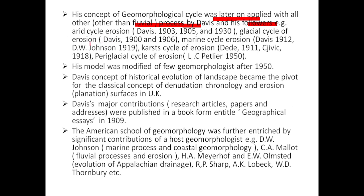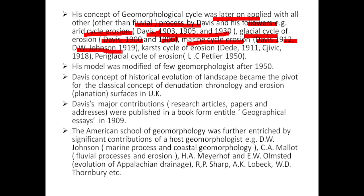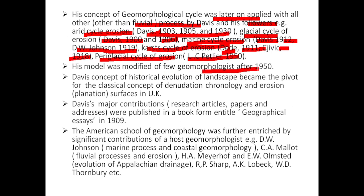His concept of the geomorphological cycle was later applied to processes other than fluvial. Examples include: arid cycle of erosion by Davis (1903, 1905, 1930), glacial cycle of erosion by Davis (1900, 1906), marine cycle of erosion by Davis (1912) and D.W. Johnson (1919), karst cycle of erosion by Cvijic (1918), and periglacial cycle of erosion by L.C. Peltier in 1950. His model was modified by a few geomorphologists after 1950.